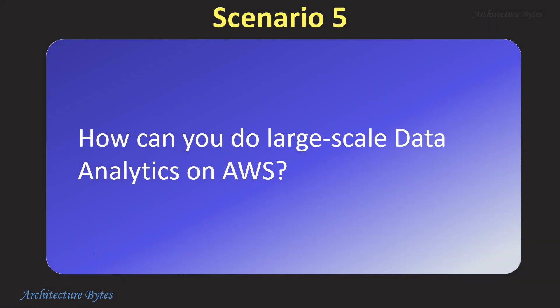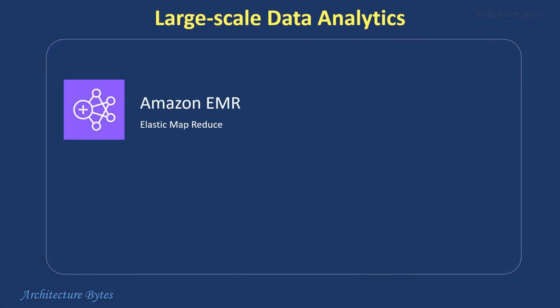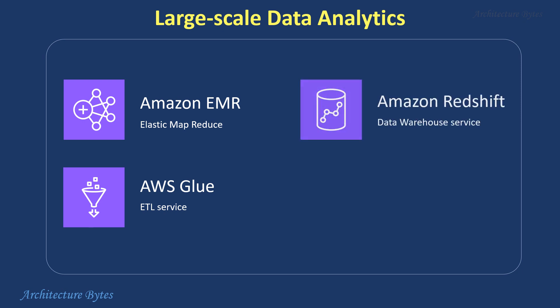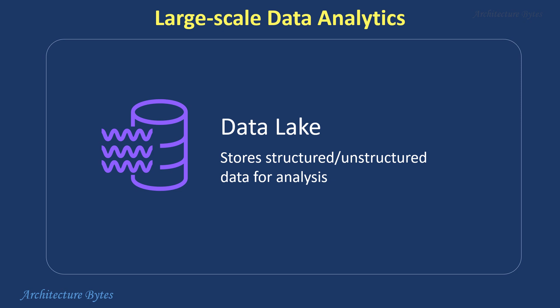How can you do large-scale data analytics on AWS? Let's discuss a few AWS services that can help here. Use Amazon EMR for big data processing, AWS Glue for ETL, Amazon Redshift for data warehousing, and Amazon Athena to query and analyze data in S3 using SQL. Data lakes can be used to store large quantities of structured and unstructured data for analysis.